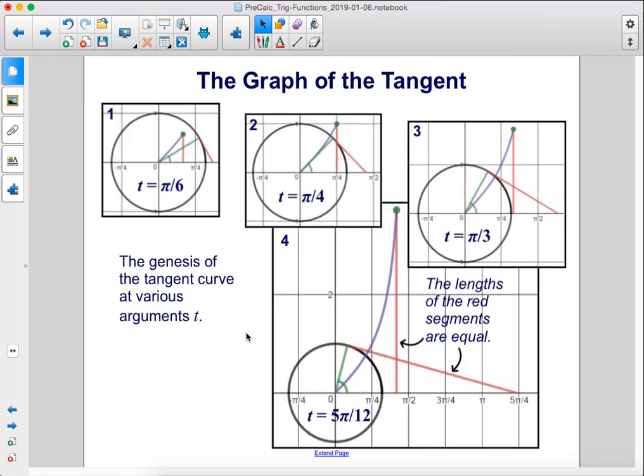The genesis of the tangent curve at various arguments t. As the point moves up the unit circle, you can see that the tan value increases. The length of this red line increases. When you're up here, you have a large sine value over a small cosine value, so the tangent value is very large.